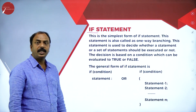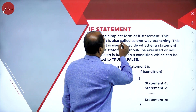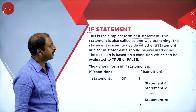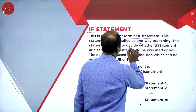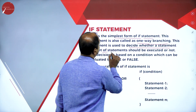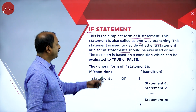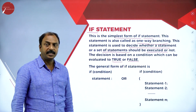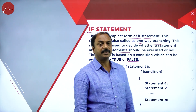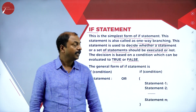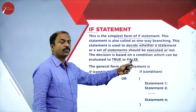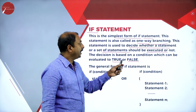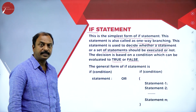The if statement is the simplest form of selection statement. It is also called a one-way branching statement. This statement is used to decide whether a statement or set of statements should be executed or not. The decision is based on a condition evaluated as true or false. If the condition is true it executes the statements; if false it executes another set.